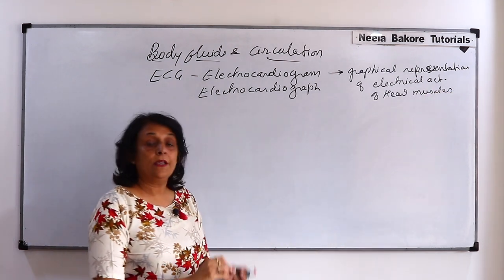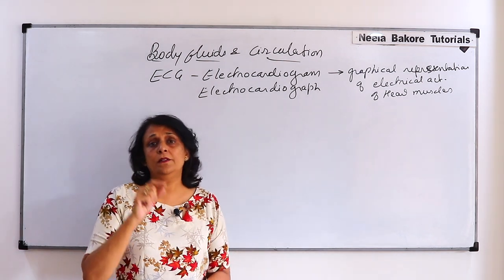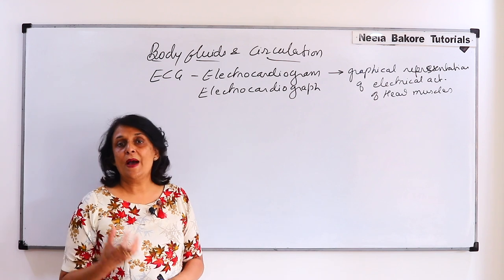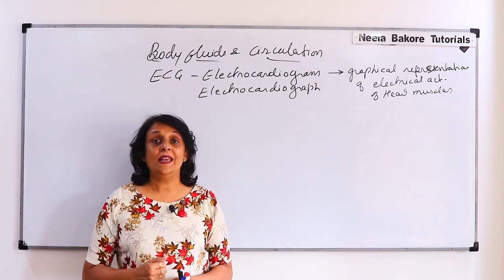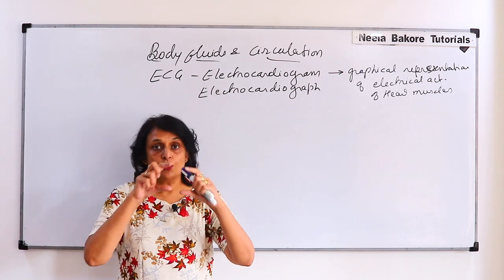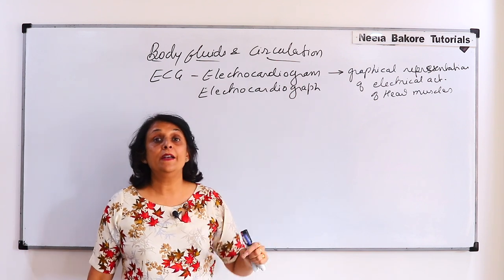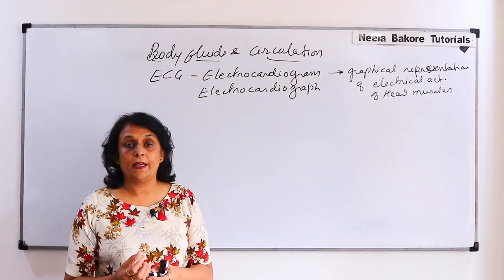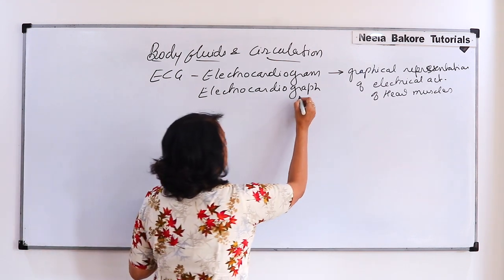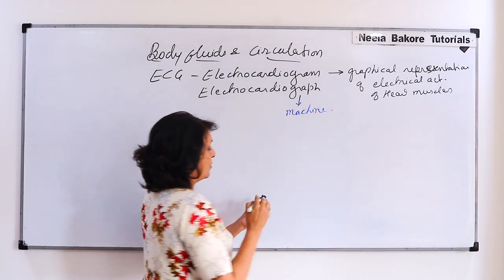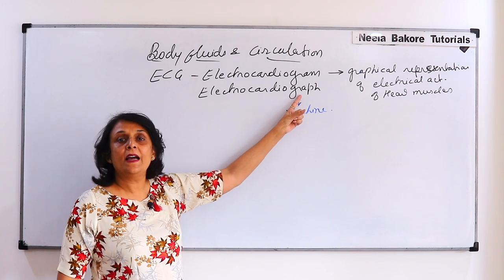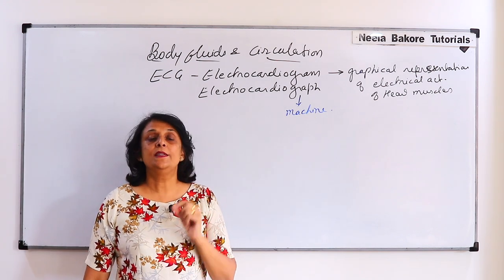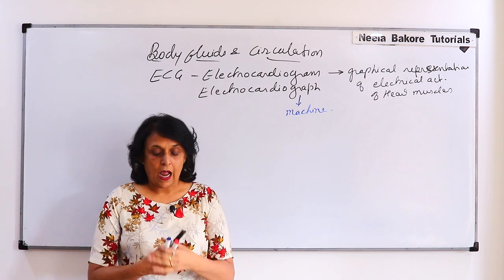The graph shows P, Q, R, S, T waves — this is the graphical representation of the electrical activity of our heart muscles. The graph paper we call it electrocardiogram, and the machine which records the electrocardiogram we call it electrocardiograph. So students often have confusion: if there is a graph, that is the electrocardiogram; the electrocardiograph is the machine used to record it.